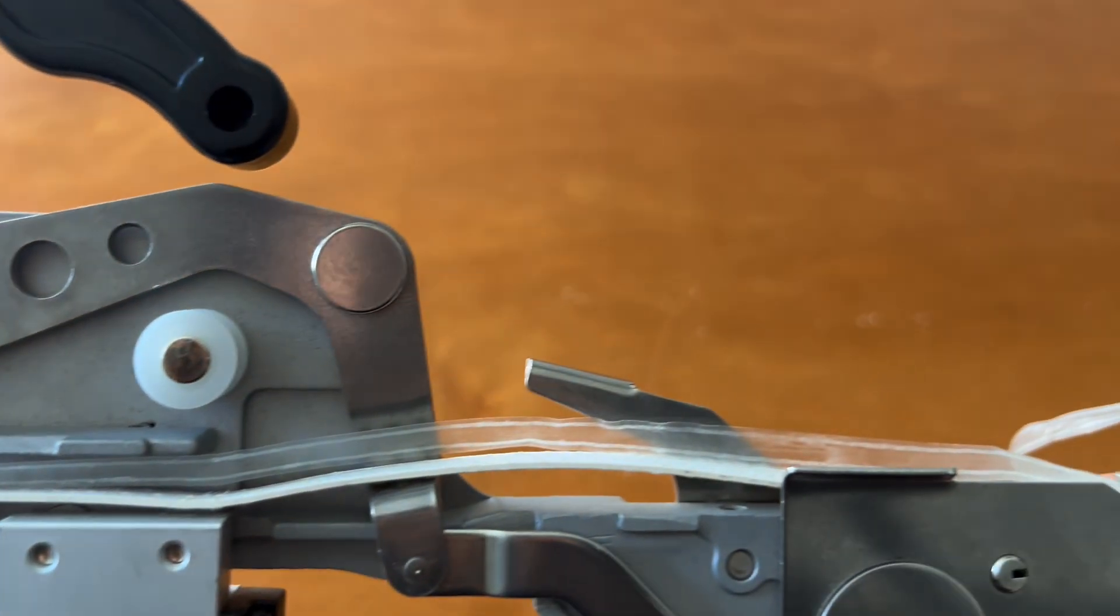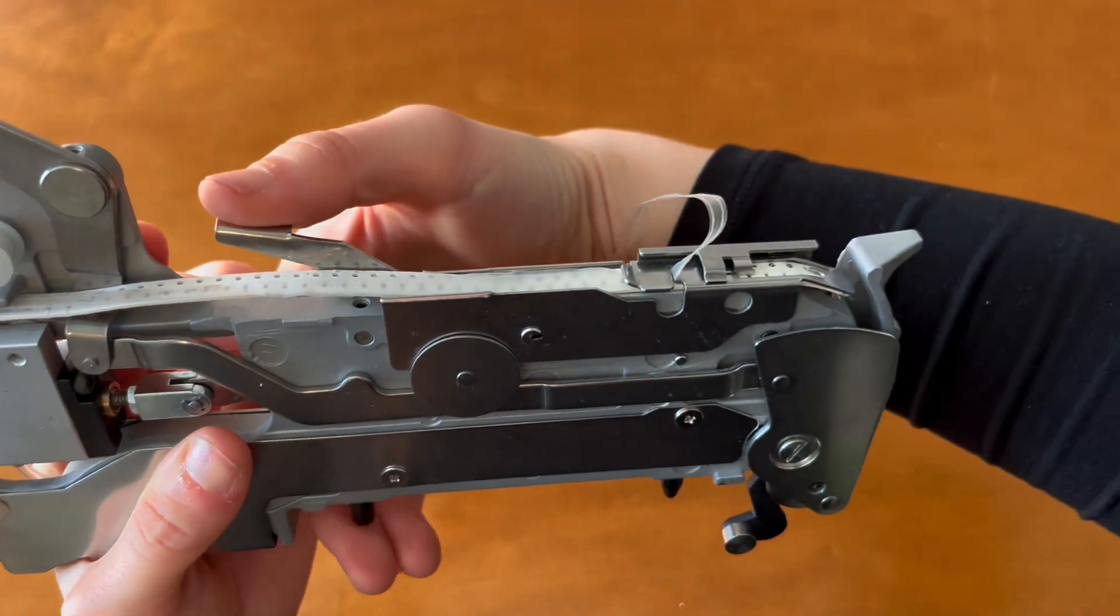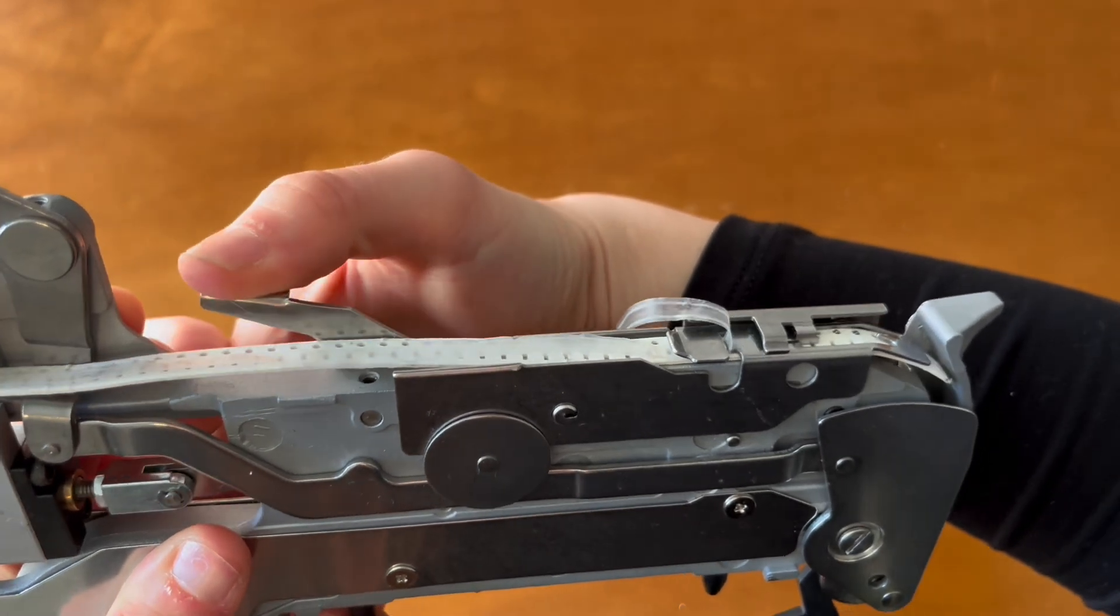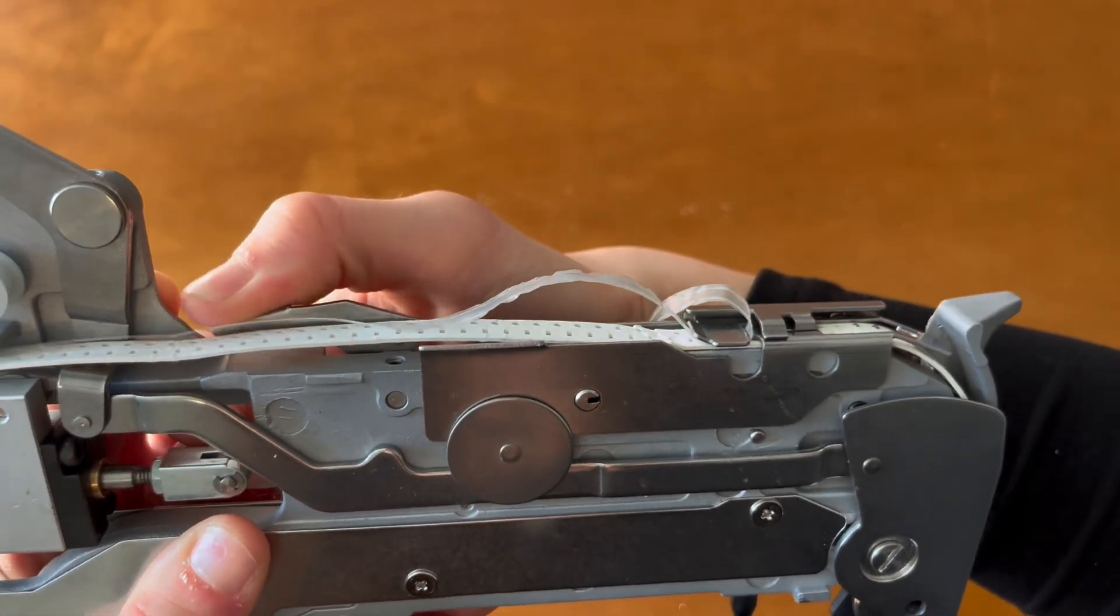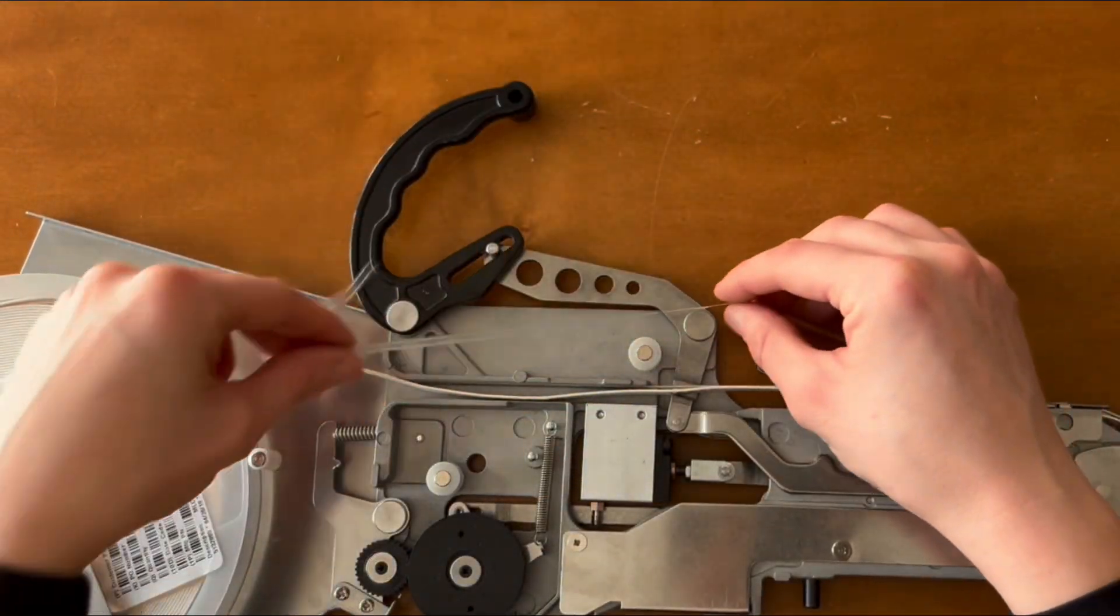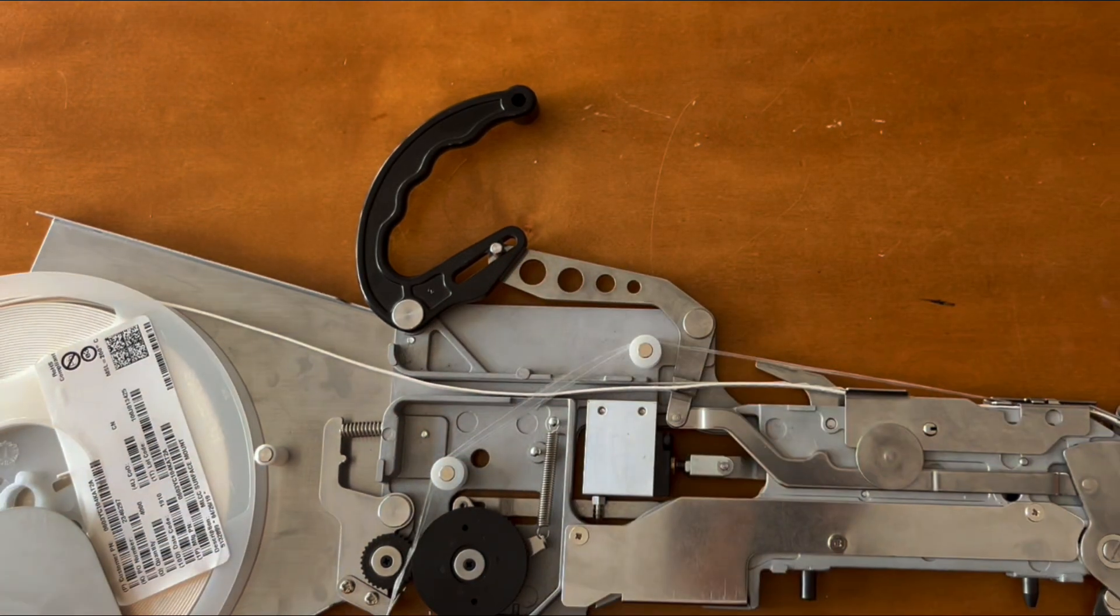With both tapes in place, we're going to advance the carrier tape forward by repeatedly pressing down on the manual advance button. While you're doing this, make sure to pull the cover tape taut as it shifts so it doesn't bunch up or slip out from under the tape guide frame. Continue advancing the tape until you have enough cover tape to go over both pulleys and the cover tape advancing wheels.